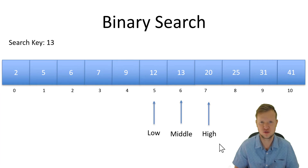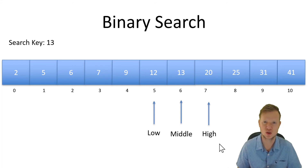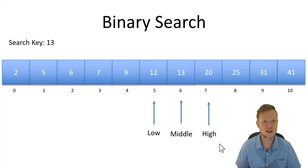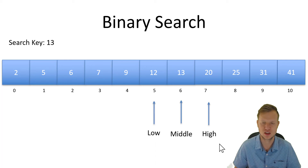By halving the database every time and adjusting high or low, we decrease the number of comparisons needed to find the search key. Binary search is very effective for finding specific values quickly compared to linear search, but we must remember that the array or database must be sorted beforehand. In the next lesson we will cover the actual implementation of binary search in C programming, walking through each step of the algorithm.